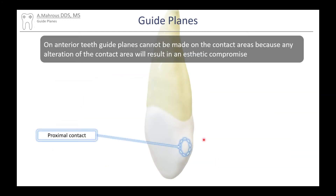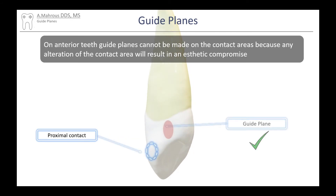On anterior teeth, guide planes cannot be made on the contact areas because any alteration of the contact area will result in an aesthetic compromise. To remedy that issue, guide planes on anterior teeth are prepared lingual to the contact in that area.